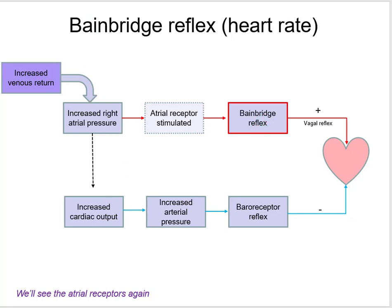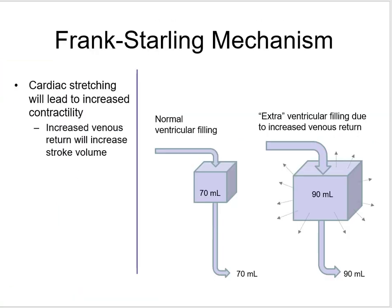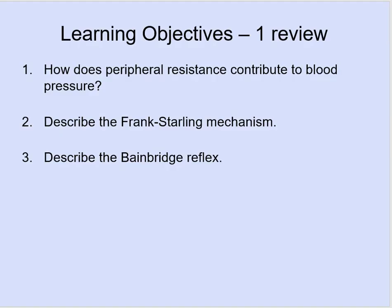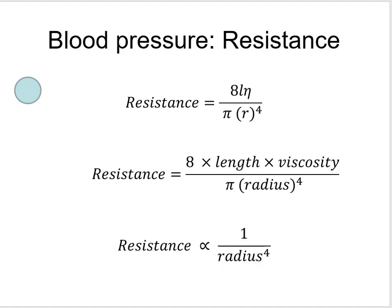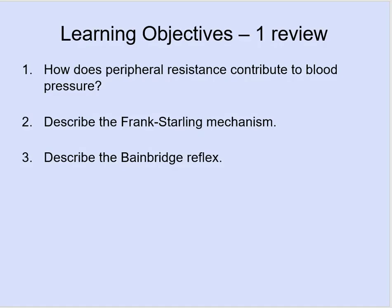Ultimately: increased venous return leads to increased heart rate via the Bainbridge reflex, and increased venous return leads to increased contractility and stroke volume via the Frank-Starling mechanism, resulting in increased cardiac output. That covers how peripheral resistance contributes to blood pressure, and describes both the Frank-Starling mechanism and the Bainbridge reflex. That wraps up lecture number one.